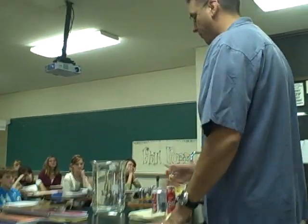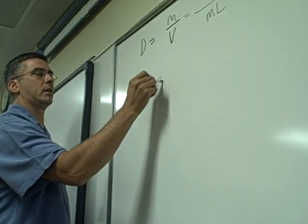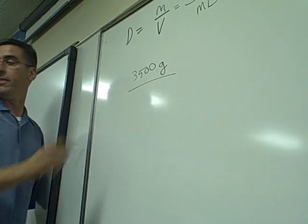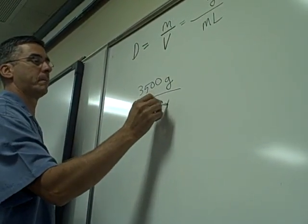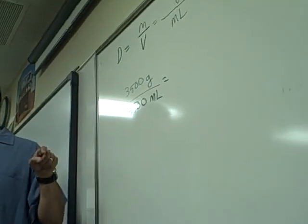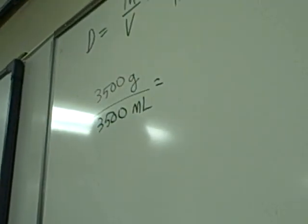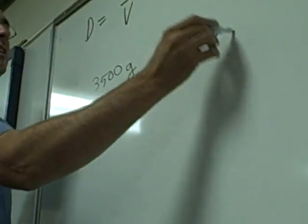Just a big beaker of water. We have about 3,500 grams of water in there and that is about 3,500 milliliters. Even the sophomores could reduce this fraction. If I found the density of water, I take its mass — the mass of the water divided by its volume — we would get a density of water of about 1 gram per milliliter.